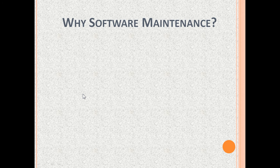Why is software maintenance required? The reasons for software maintenance are: first, to fix bugs. This is also called corrective maintenance.